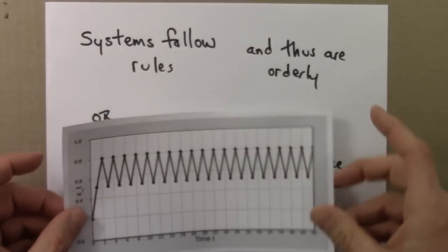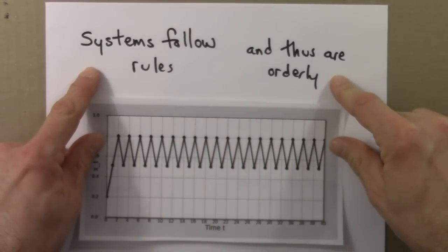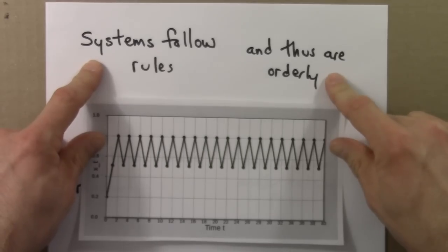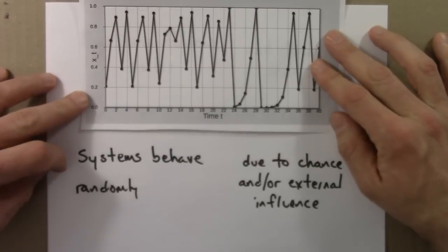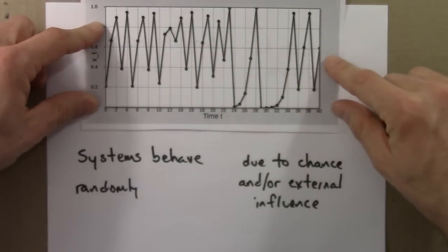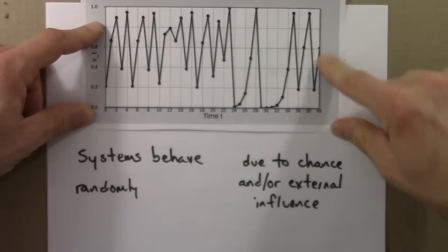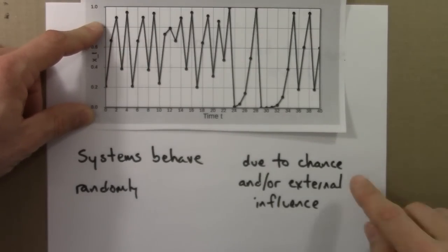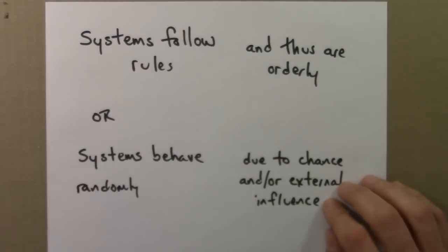So if we saw something like this, we'd say, aha, it must be following a rule. And that's why we see orderliness, because rules are orderly, and rules, orderly rules give rise to orderly behavior. And if we saw this, we would say, aha, the system's behaving randomly. It's not settling down. It's not cycling. So these rabbits, whatever they're doing, they're not following a rule. It's due to chance. Maybe the rabbits behave randomly. There's some inherent stochasticity in the affairs of rabbits. Or there's external influences that are acting irregularly and at random that's making this happen.